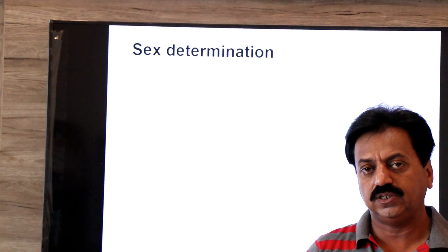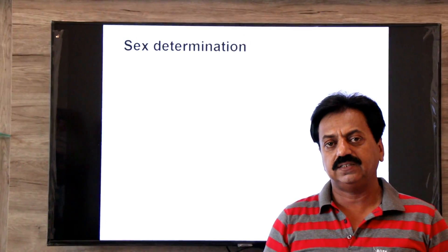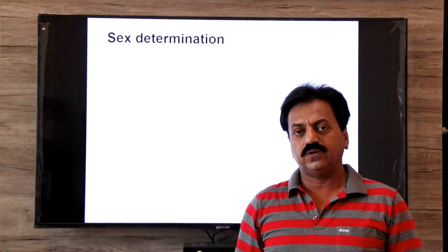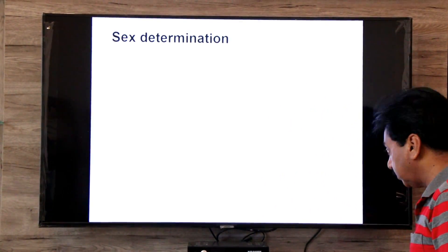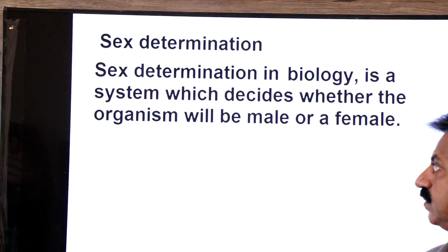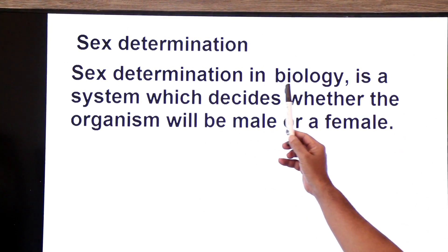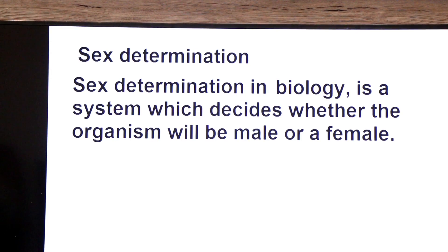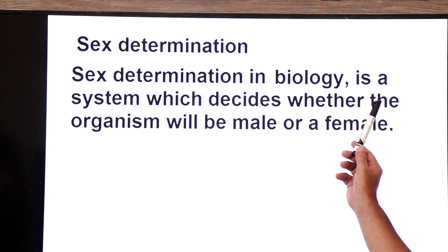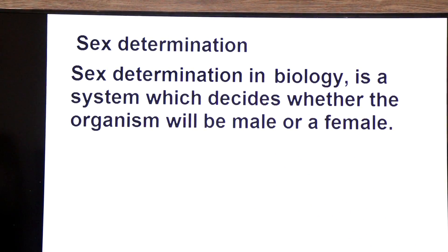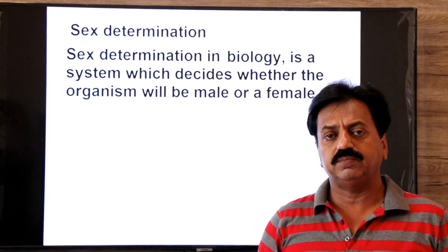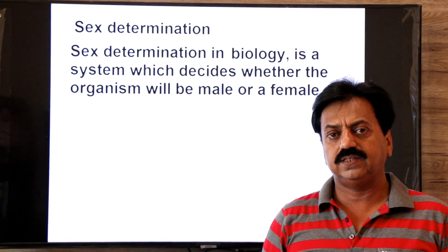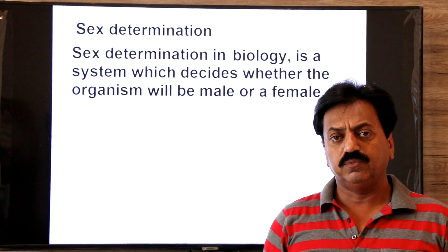Today we will talk about the mechanism of sex determination. It is the process that determines whether the zygote develops into male or female. Sex determination in biology is a system which decides whether the organism will be male or female. There are different types of sex determination — like XX/XY and ZZ/ZW.